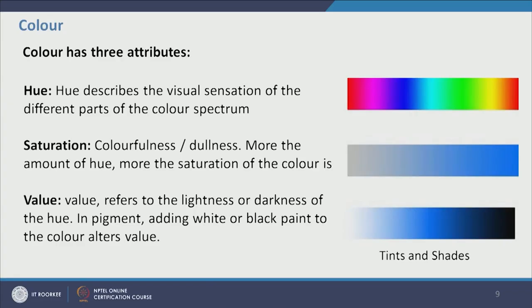The next element of design is color. Color has three attributes: hue, saturation, and value. Hue is the visual sensation of different color spectrums — each hue is associated with a different wavelength of light. Different examples of hue include purple, red, blue, cyan, and green, each associated with a particular wavelength of light.